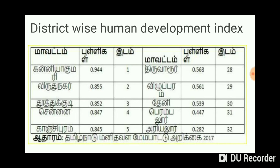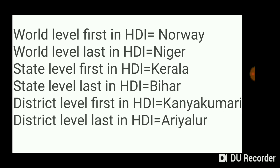We should check the first level and last level. Here is the summary: At the World Level, the 1st ranked country is Norway. At the last position is Niger. At the State Level, first is Kerala. At the District Level in Tamil Nadu, Kanyakumari ranks among the top, covering World, State, and District levels.